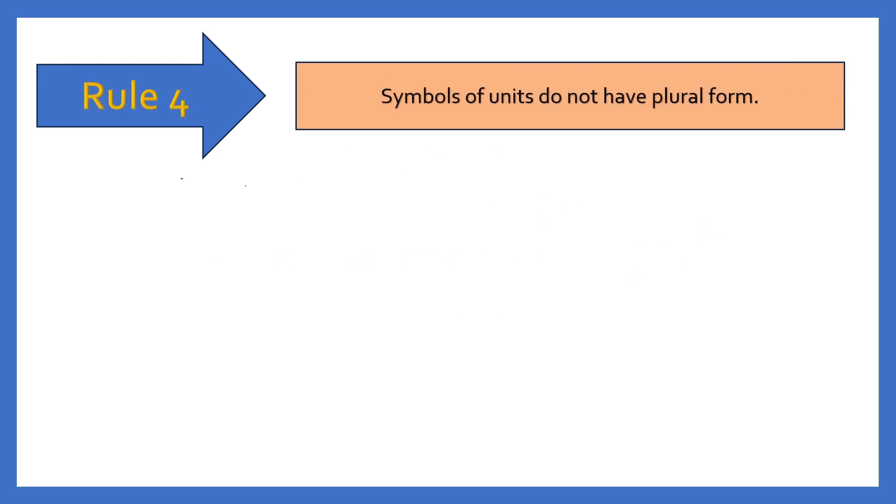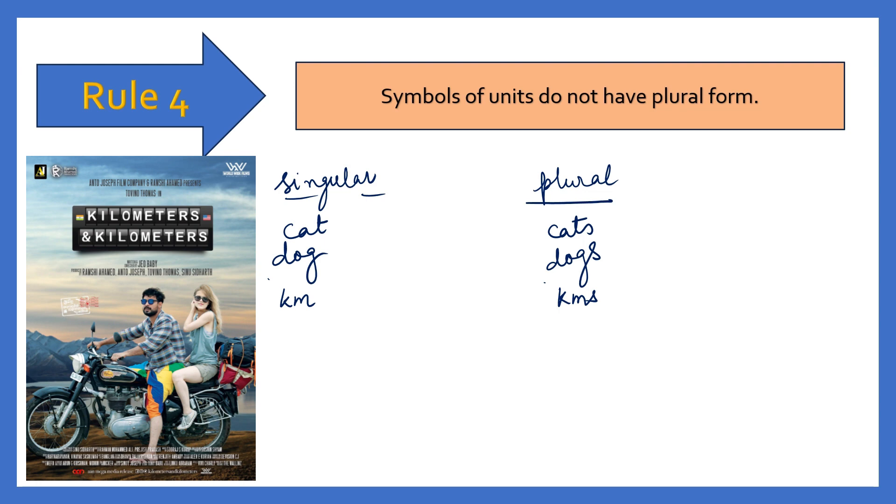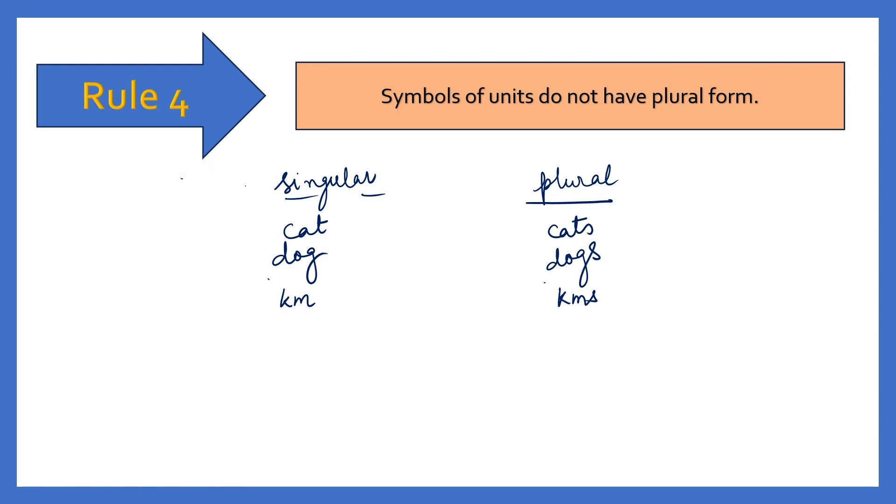Rule number four: symbols of units do not have plural form. So this we always study in English. What is that? Singular, when the quantity of something is one, and if it is more than one, plural. And generally the conversion is very simple. Say this is cat. So if I have one cat I say cat, and it becomes plural, becomes cats. Dog, dog becomes dogs. Kilometer becomes kilometers, right?